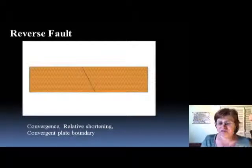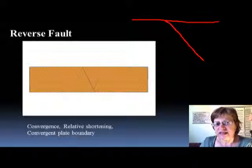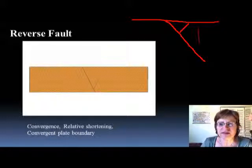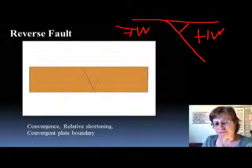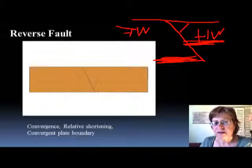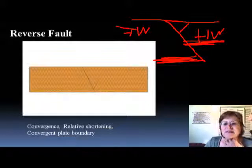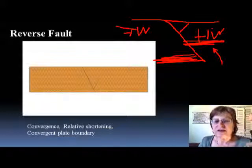On the other hand, when you have a reverse fault — here is the surface, that's the fault line. The acute angle side is the hanging wall, that's the foot wall. Now I'll find a layer. You can see that on the hanging wall it moves up — the hanging wall moved up relative to the foot wall — so this is what we call a reverse fault.